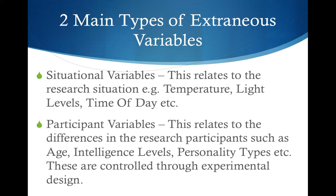There are two main types of extraneous variables. First, situational variables — these relate to the research situation, for example: temperature (hot, cold, or mild), light levels (bright or dim), and time of day (early morning, midday, or evening).